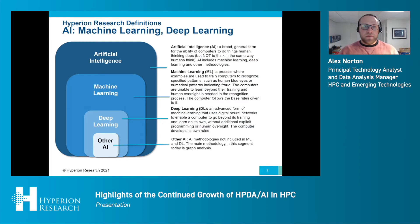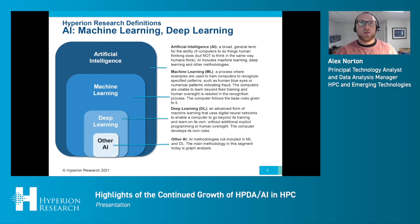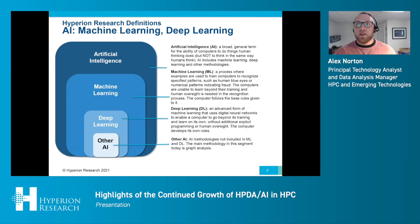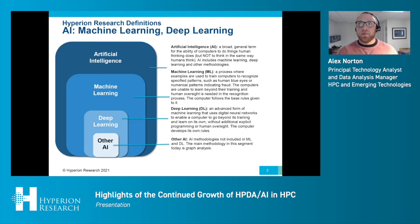To start, let's look at some definitions. When we talk about forecasts and the way that we break out the AI market, these are the definitions we use to segment it. These definitions are drawn from talking to many end users to understand the key differences and similarities between these different methodologies. AI is the umbrella term — a broad term basically meaning the ability for computers to do things that human thinking does.